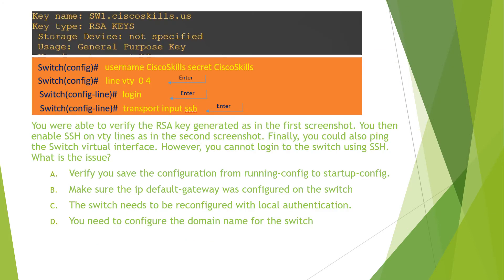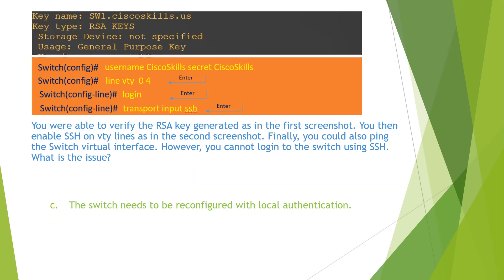The question reads: you were able to verify the RSA key generated as in the first screenshot. You then enabled SSH on the VTY lines as in the second screenshot. Finally, you could ping the switch virtual interface, however you cannot log in to the switch using SSH. What is the issue? You can identify that the current command makes the user log in with a simple password, but SSH requires the user to log in with a username and password. Therefore, you need to change this command to `login local`.